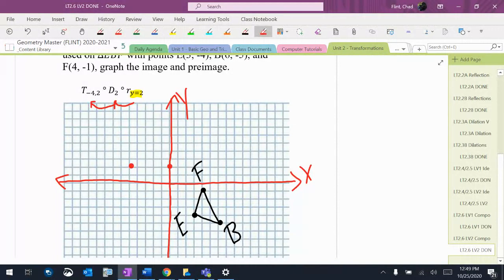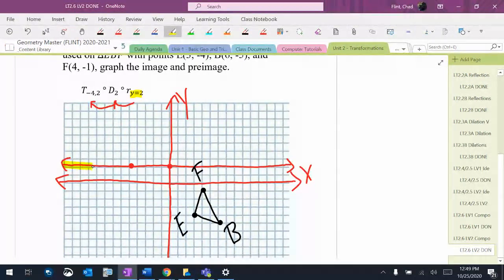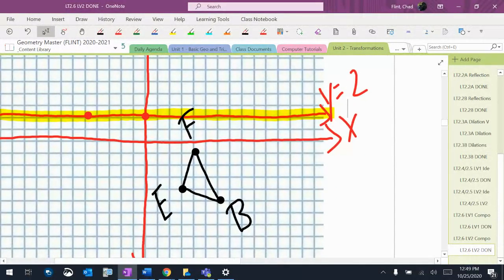So y is 2 there, and the coordinates are (0, 2) and (-5, 2). So I'm going to draw the line y equals 2, and I have to reflect each of those points over that line.